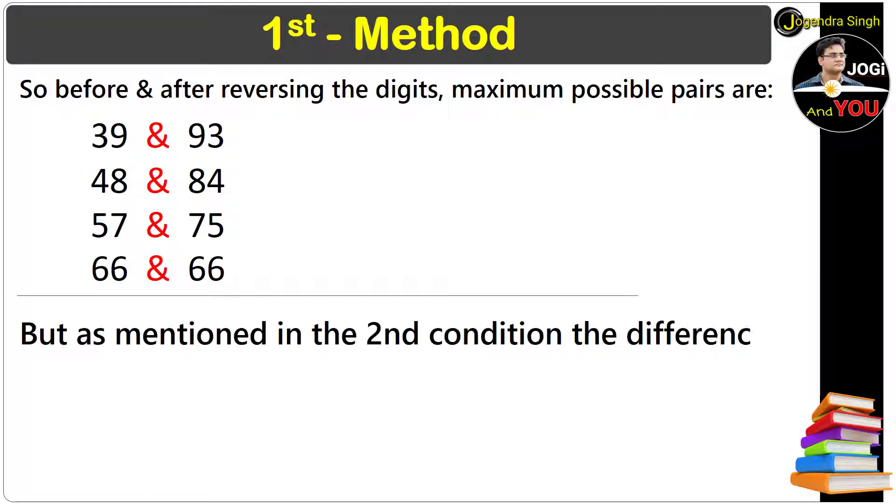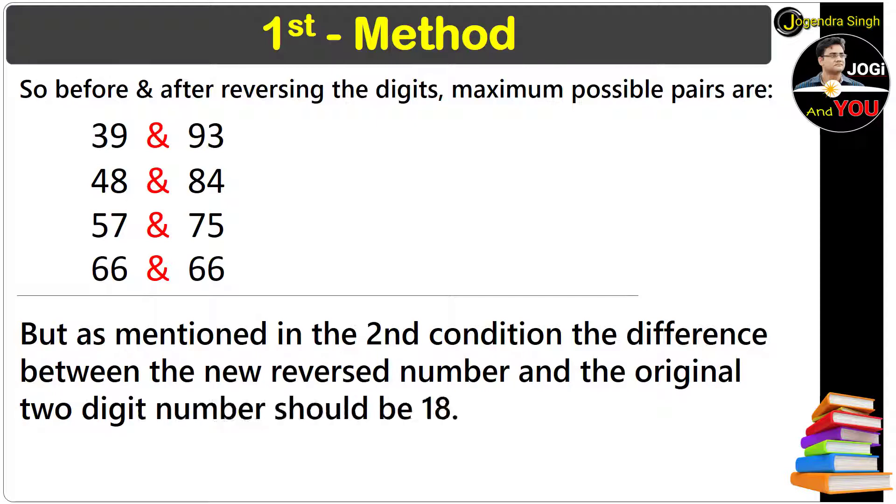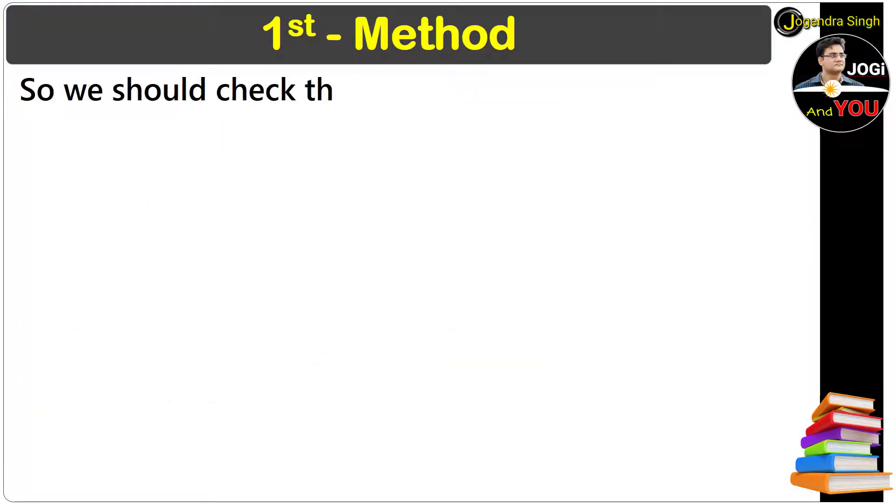But as mentioned in the second condition, the difference between the new reversed number and the original two-digit number should be 18. So we should check these pairs. Difference of these numbers is minus 54 and difference of these plus 54.